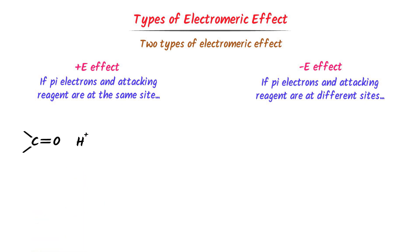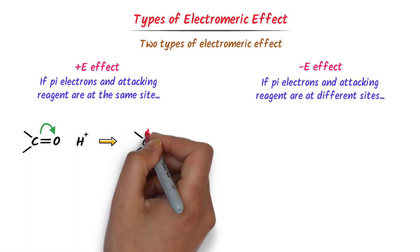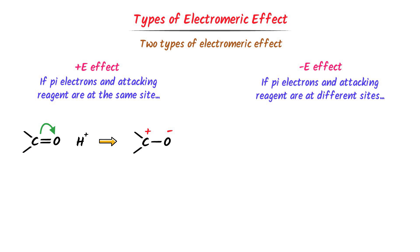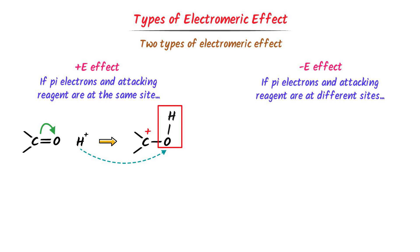Consider this organic compound with an attacking reagent. The pi electrons shift to this oxygen; a positive charge appears on this carbon and a negative charge on this oxygen. Where will the attacking reagent attack? The trick is: negative and positive attract. This positive hydrogen will attack on the negative carbon, giving this organic compound. Here, the pi electrons shifted to oxygen and the reagent also attacked on the oxygen side — pi electrons and attacking reagent are at the same site. Thus, we call this positive electromeric effect.